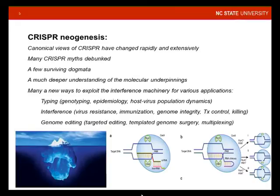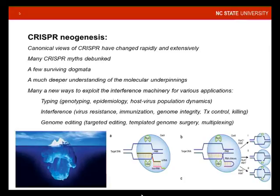A continued, deeper understanding of the molecular underpinnings of these processes will allow many scientists to harness the biochemical potential of those fantastic proteins. As of late, there are several primary research avenues to explore the interference machinery for various applications, including genotyping for epidemiological purposes, interference for viral or phage resistance, immunization against invasive foreign genetic elements like plasmids, genome integrity, transcriptional control, targeted programmable killing, genome editing, templated genome surgery, and multiplexing — opening up tremendous avenues for medical and biotechnological applications.